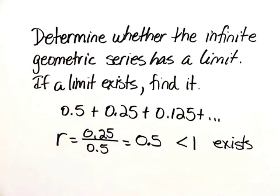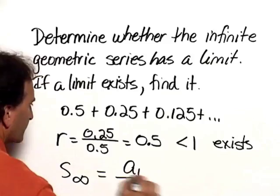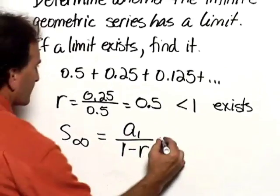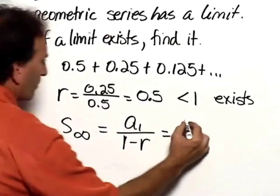So now to find the limit, we use the formula S sub-infinity equals A sub-1 divided by 1 minus R. In this case, A sub-1 is 0.5.